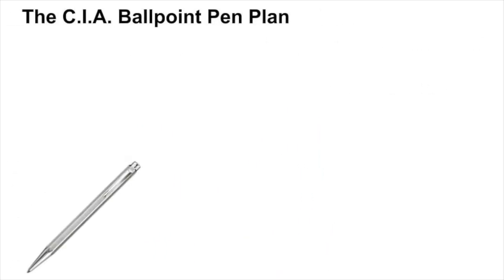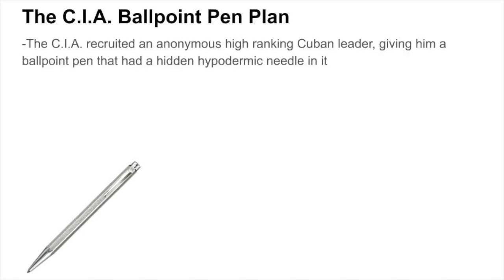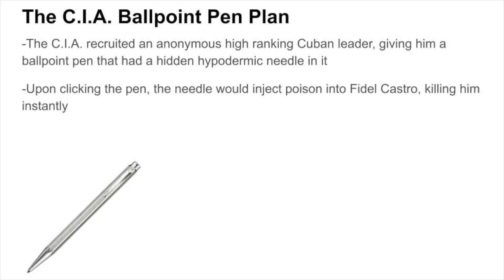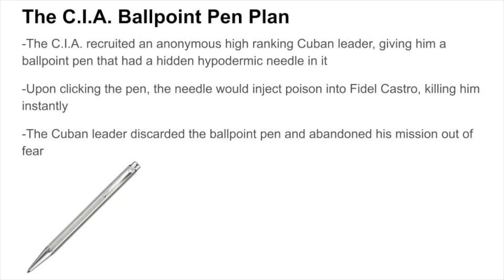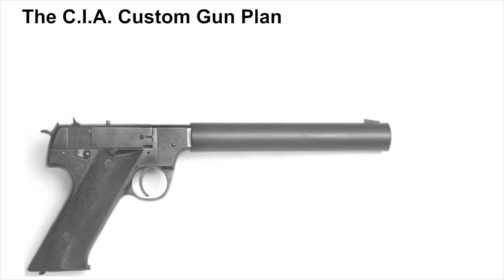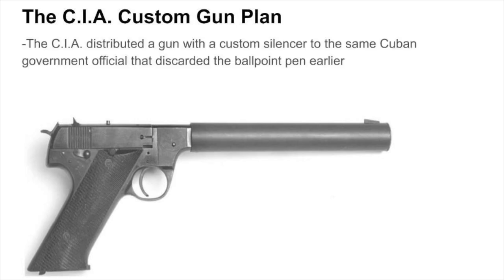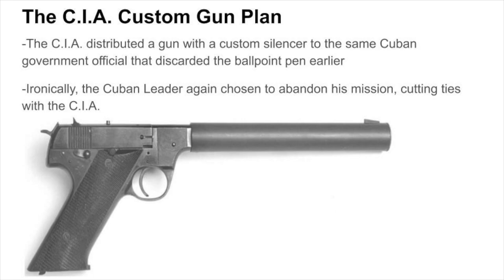The CIA's next attempt was very lethal as well. In this attempt, the CIA recruited an anonymous, high-ranking Cuban leader, giving him a ballpoint pen that had a hidden hypodermic needle in it. Upon clicking the pen, the needle would inject poison into Castro, killing him instantly. However, the Cuban leader became very afraid that he would accidentally stab himself with it, and instead chose to discard the pen altogether. After that, the CIA formulated a new plan: distributing a gun with a custom silencer to the same Cuban government official that discarded the ballpoint pen earlier. Ironically, the Cuban leader again chose to abandon his mission, cutting ties with the CIA.